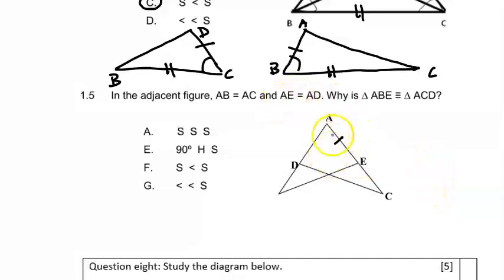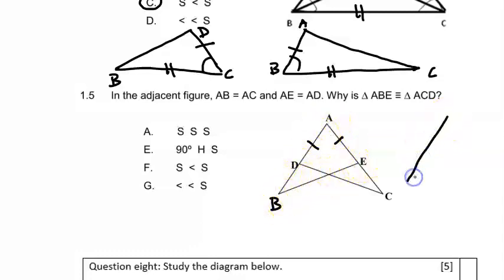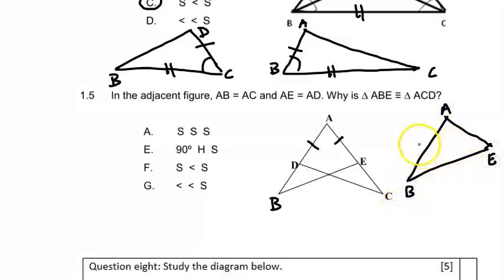Now that you've answered it, let's look at this question. Here they tell us that AE is equal to AD, and AB is equal to AC. We are asked why is triangle ABE congruent to triangle ACD. Let's look at that very carefully — let's draw triangle ABE separately with points A, B and E.